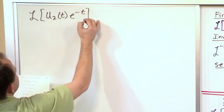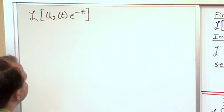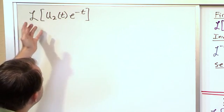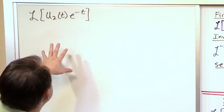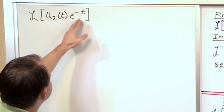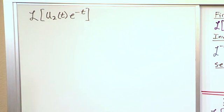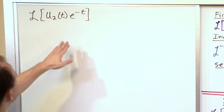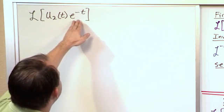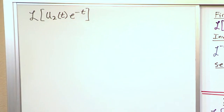Previously, if you saw something like this, you would have absolutely no idea how to handle it because it looks foreign. You have u₂ — what does that mean? All it means is that at time 2, this function turns on, and prior to that it's at zero. So this is a step function. However, after time 2, we have an exponential that's active.